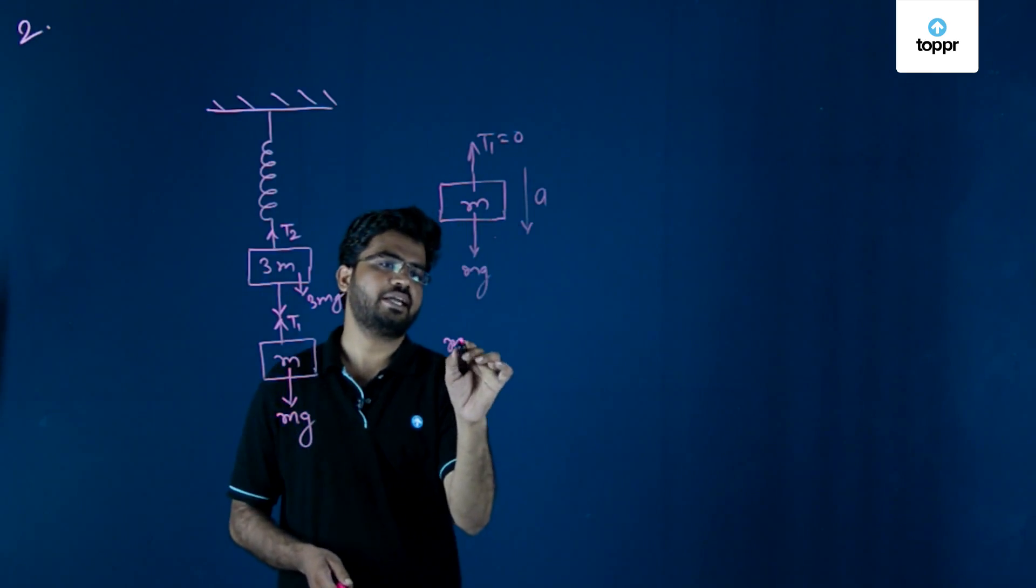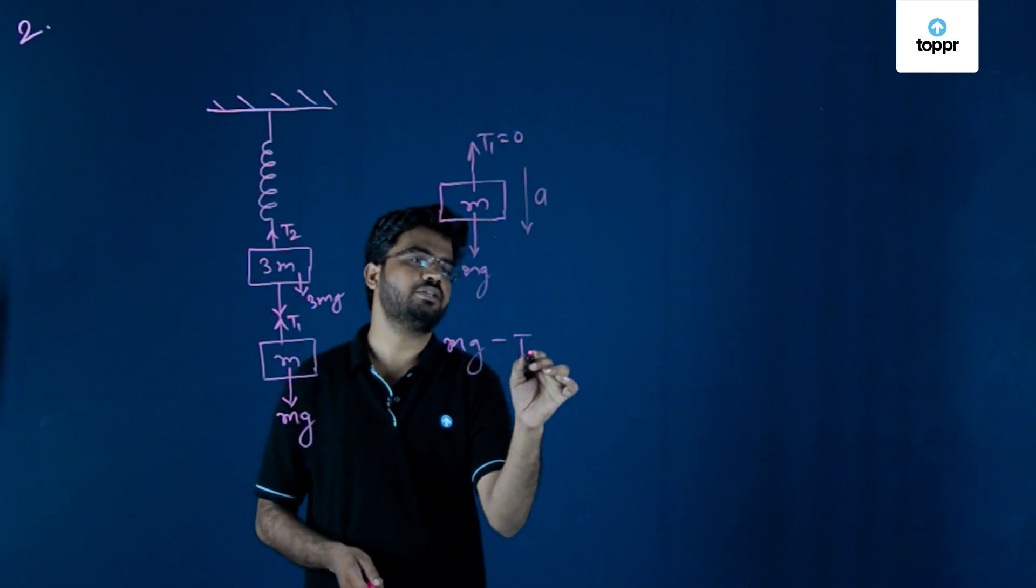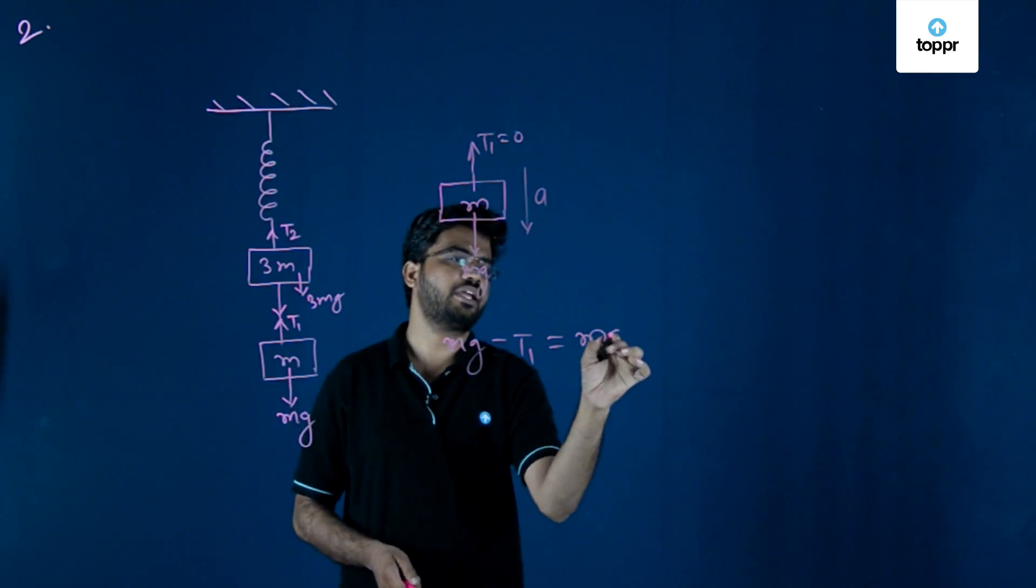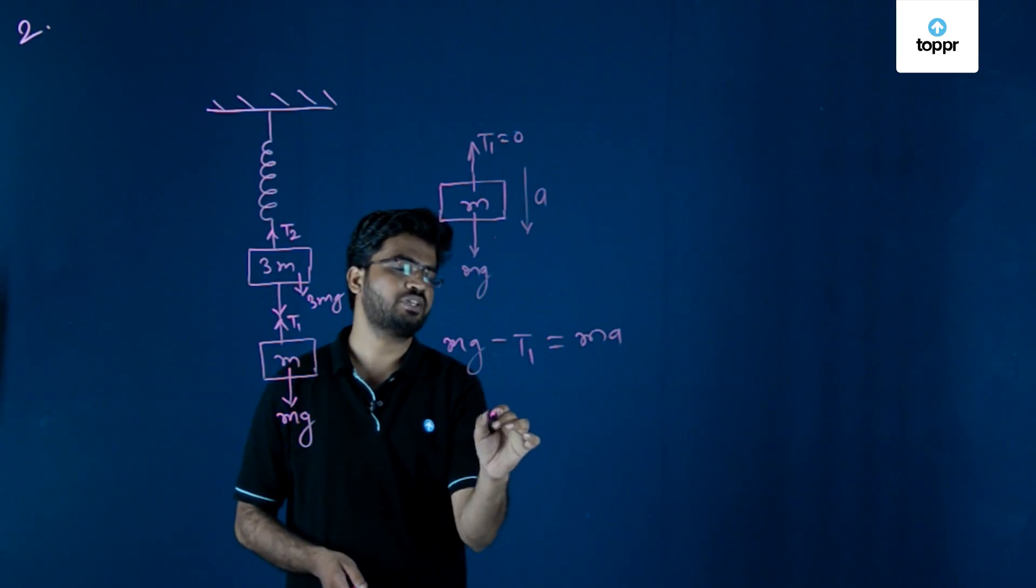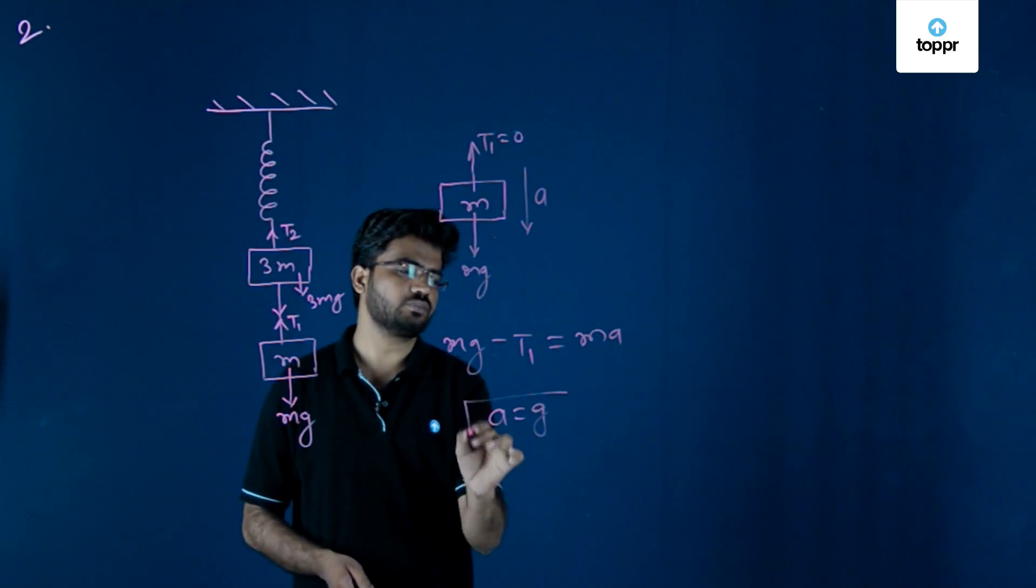When you write the equation for this, you will get mg minus T1 equals ma. As T1 equals 0, a equals g.